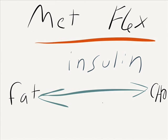At the simplest level, the two main fuels the body uses are fats and carbohydrates. Of course, there are a bunch of intermediates, but we're not going to worry about that for now.